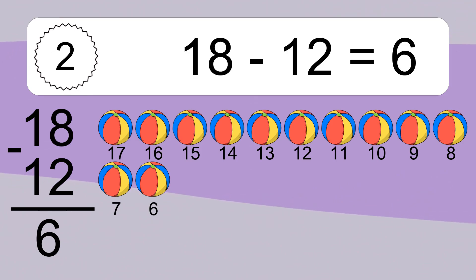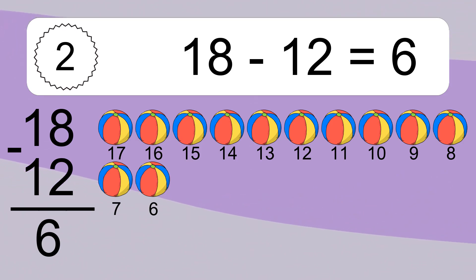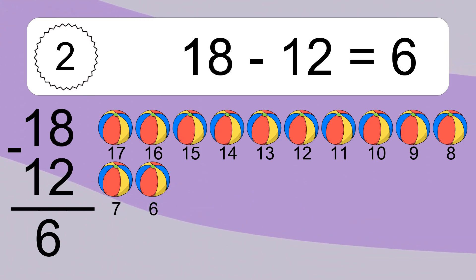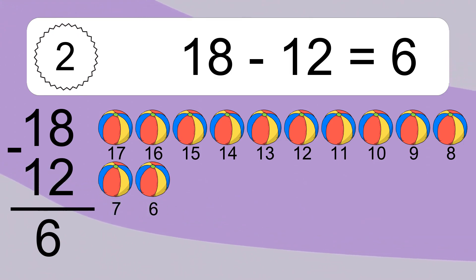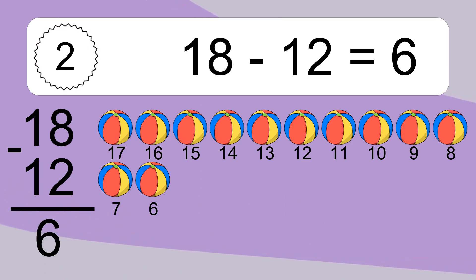Let's count it. 17, 16, 15, 14, 13, 12, 11, 10, 9, 8, 7, 6. 18 minus 12 equals 6.